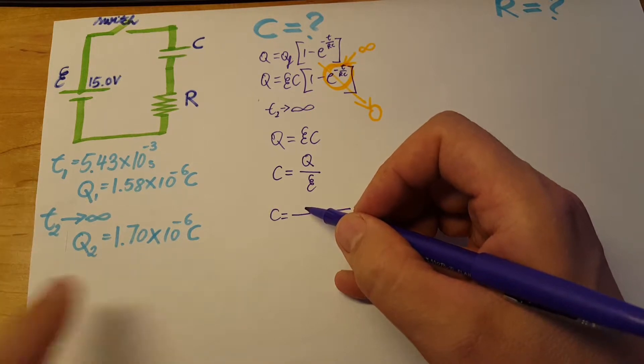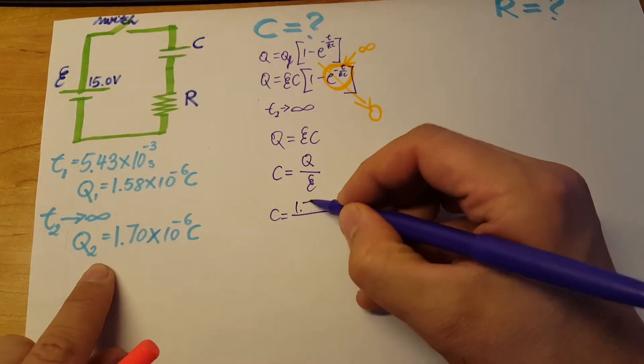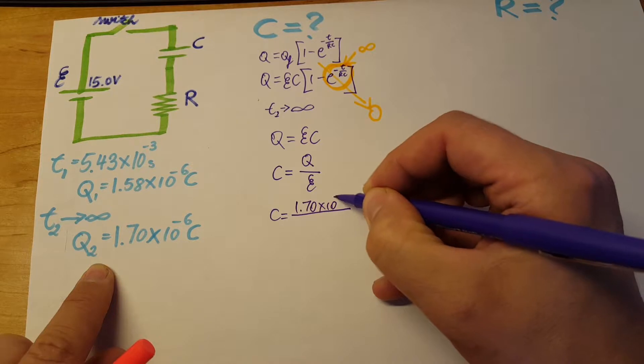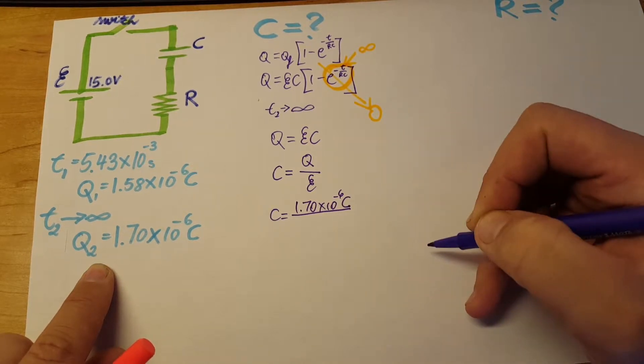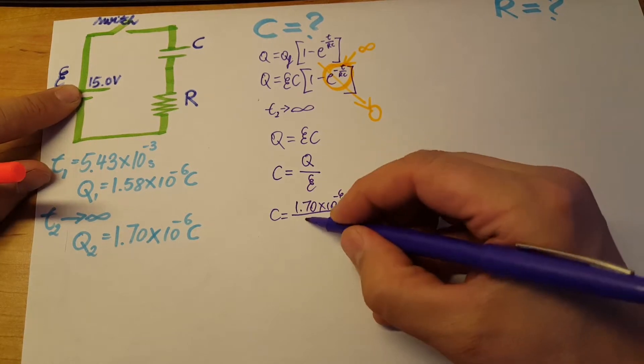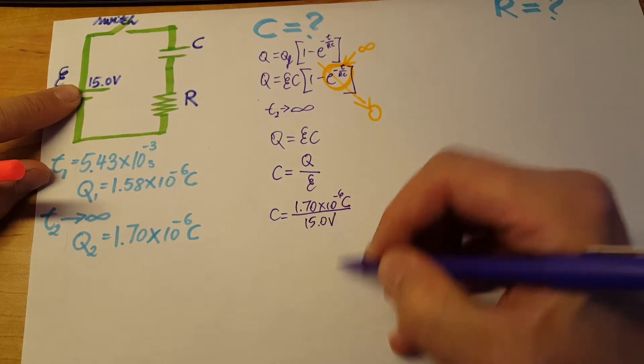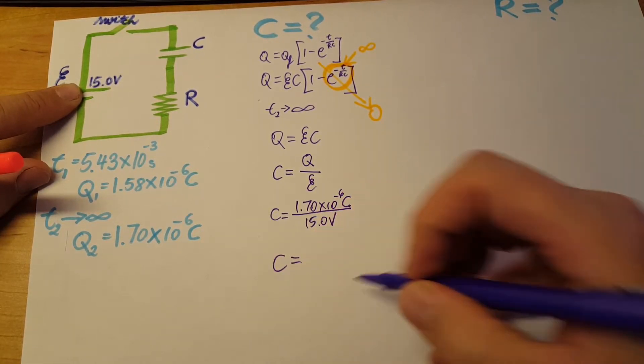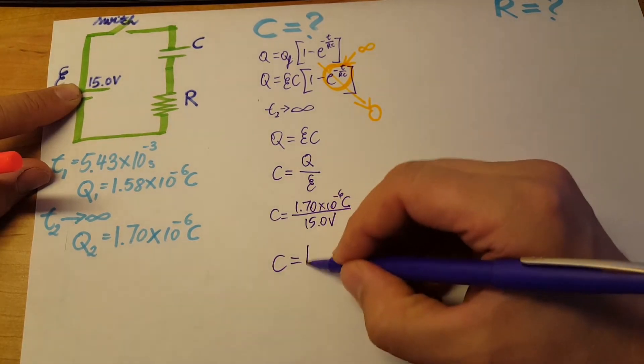C equals our Q from T2, which is 1.70 times 10 to the negative 6 coulombs, divided by our EMF of 15.0 volts. Our capacitance comes out to be 1.13 times 10 to the negative 7 farads.